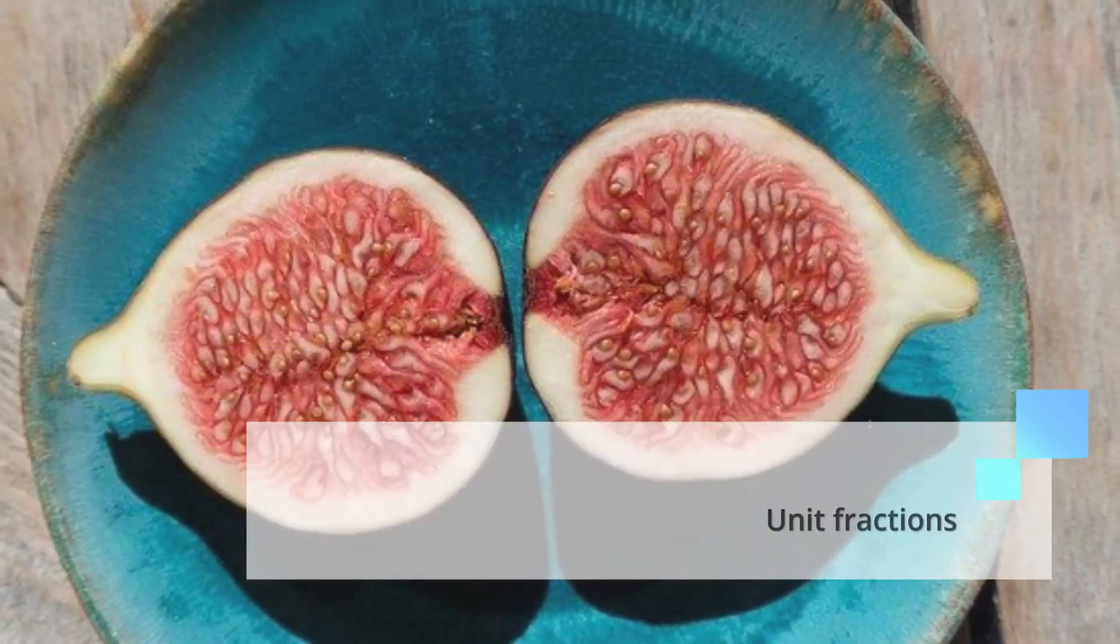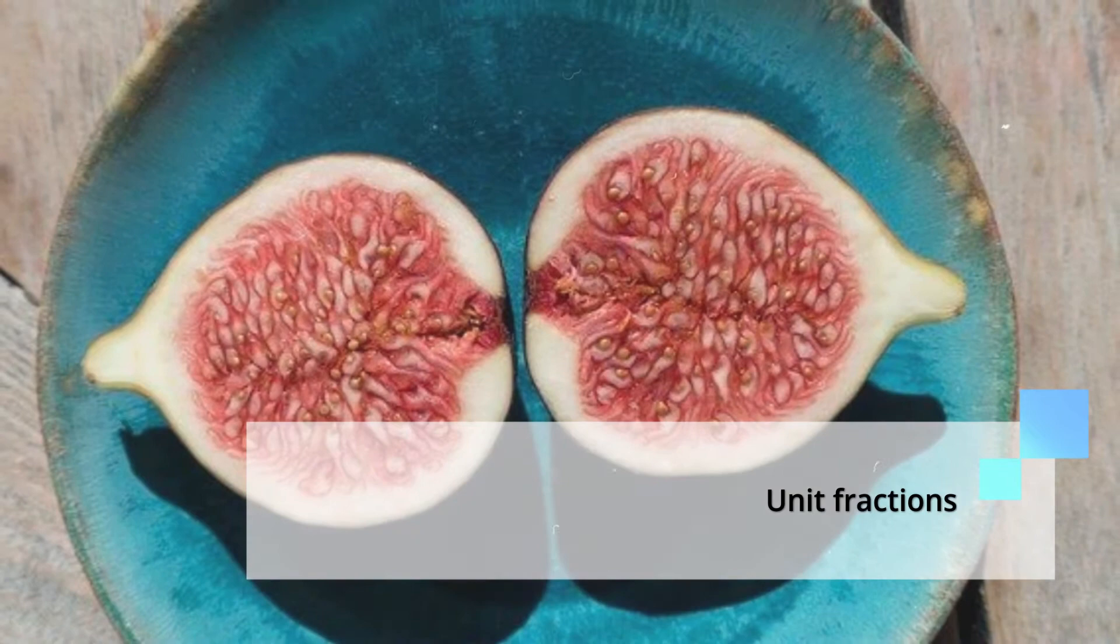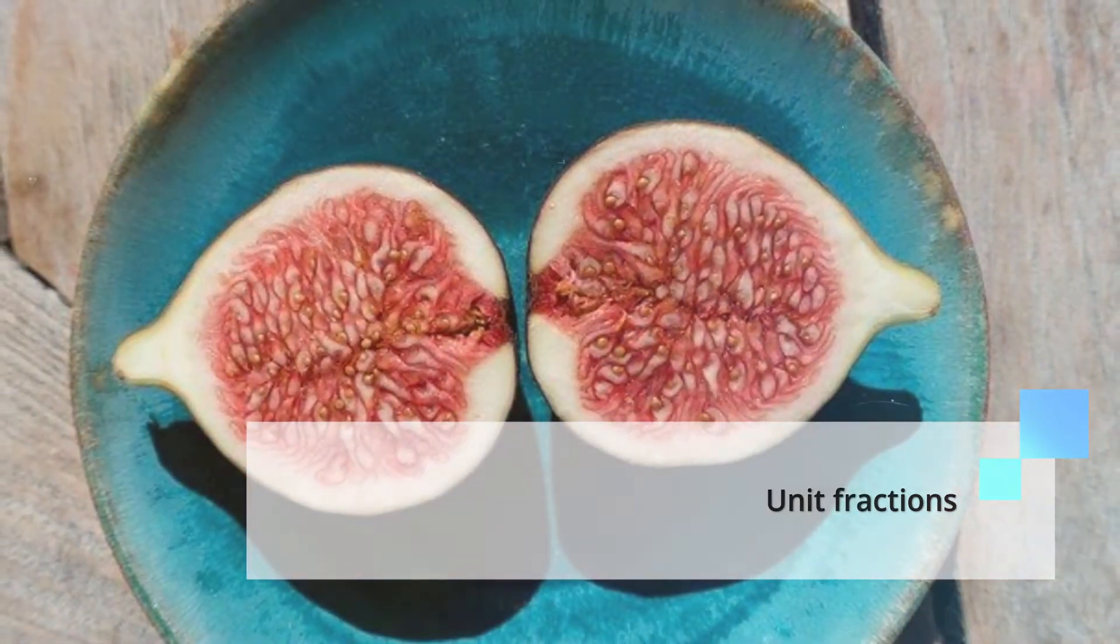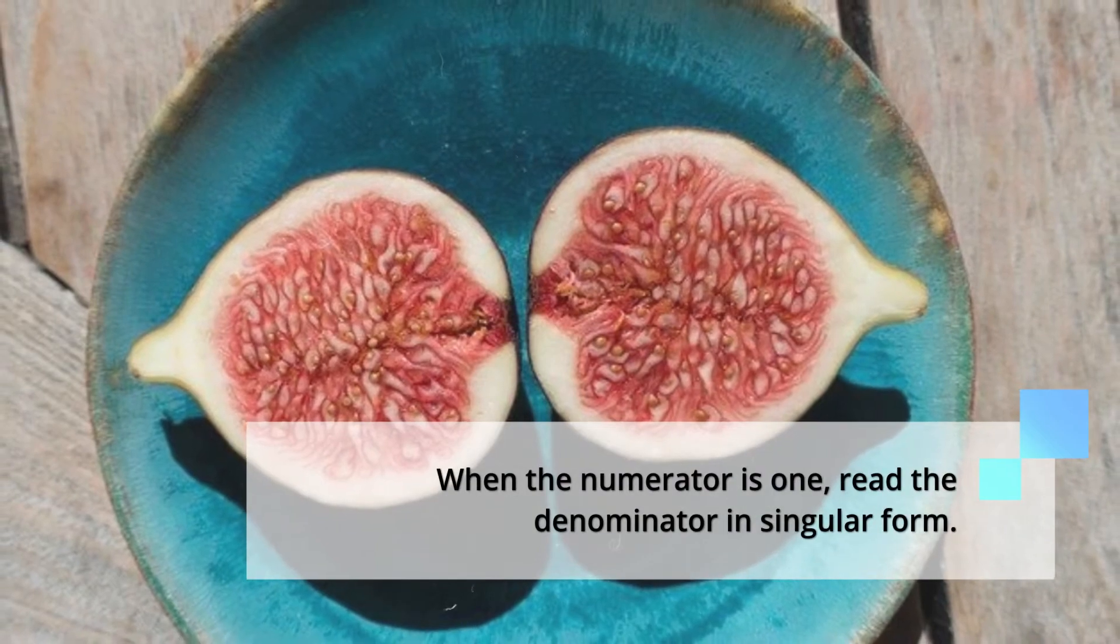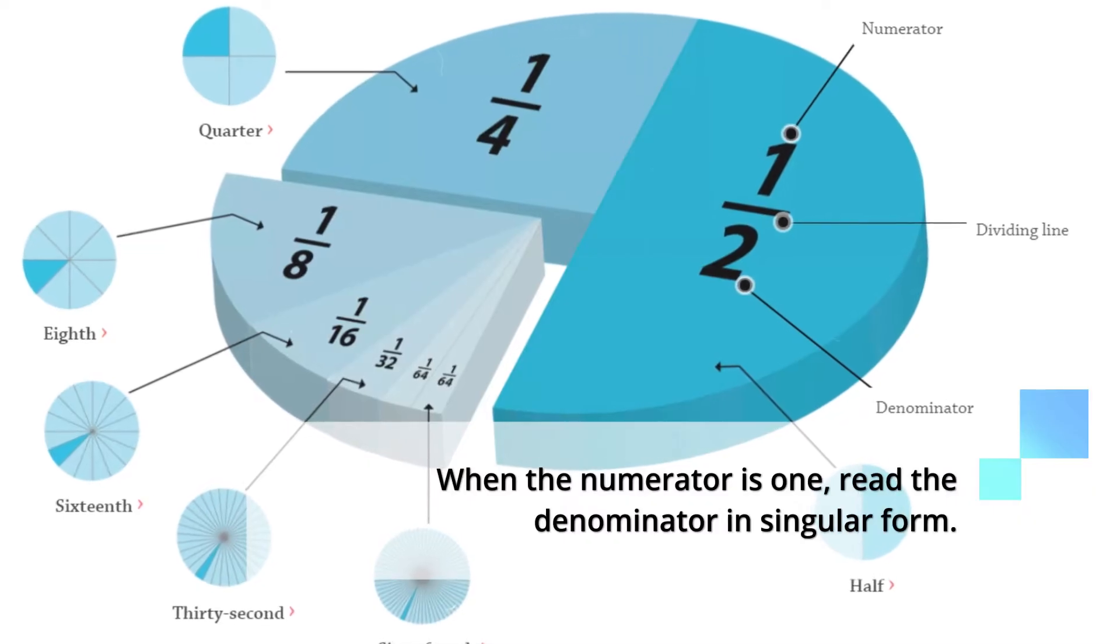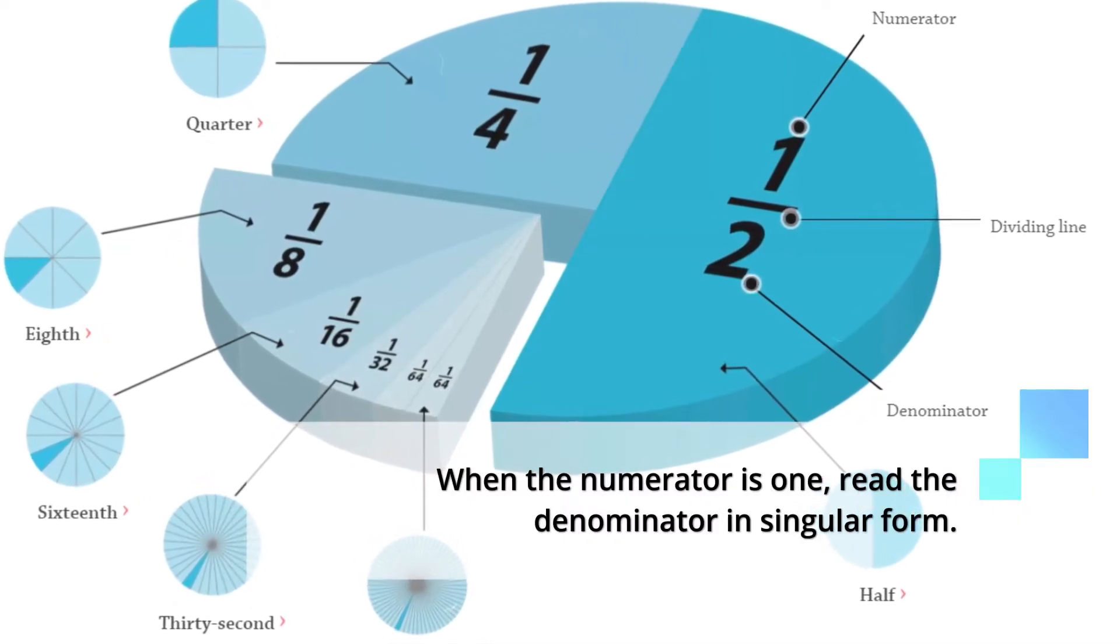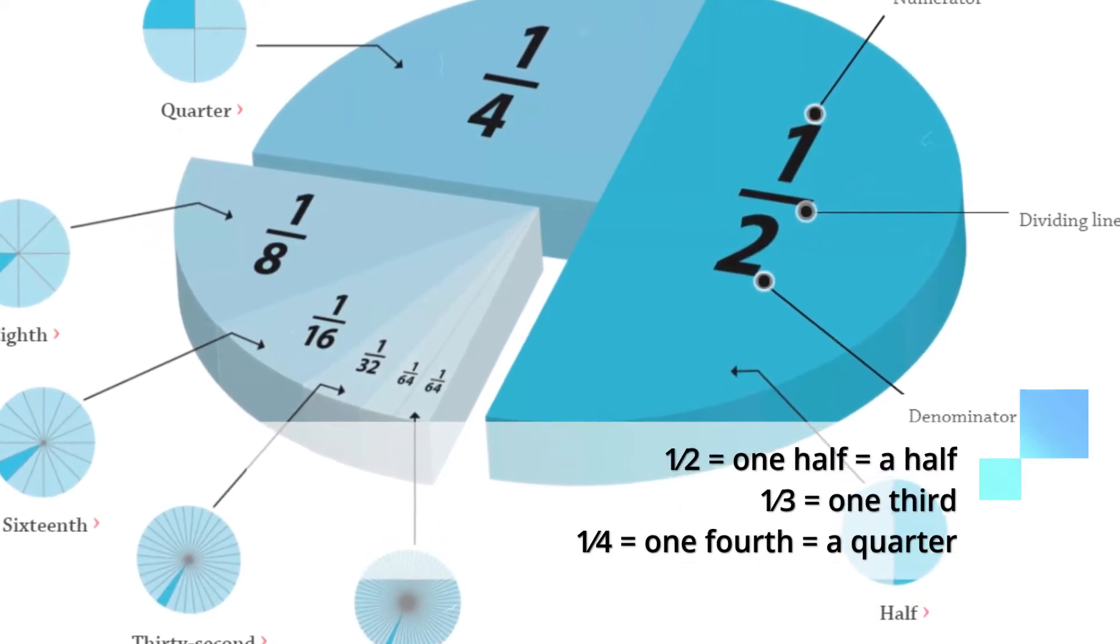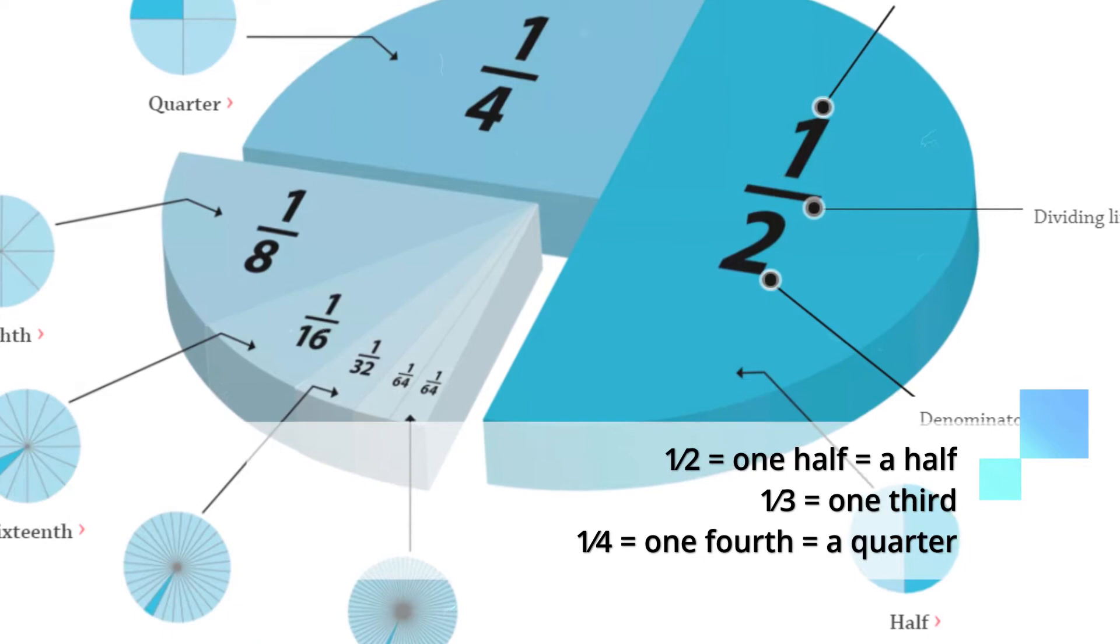When the numerator is 1, read the denominator in a singular form. For example, 1 half, 1 third, 1 fifth, and so on.